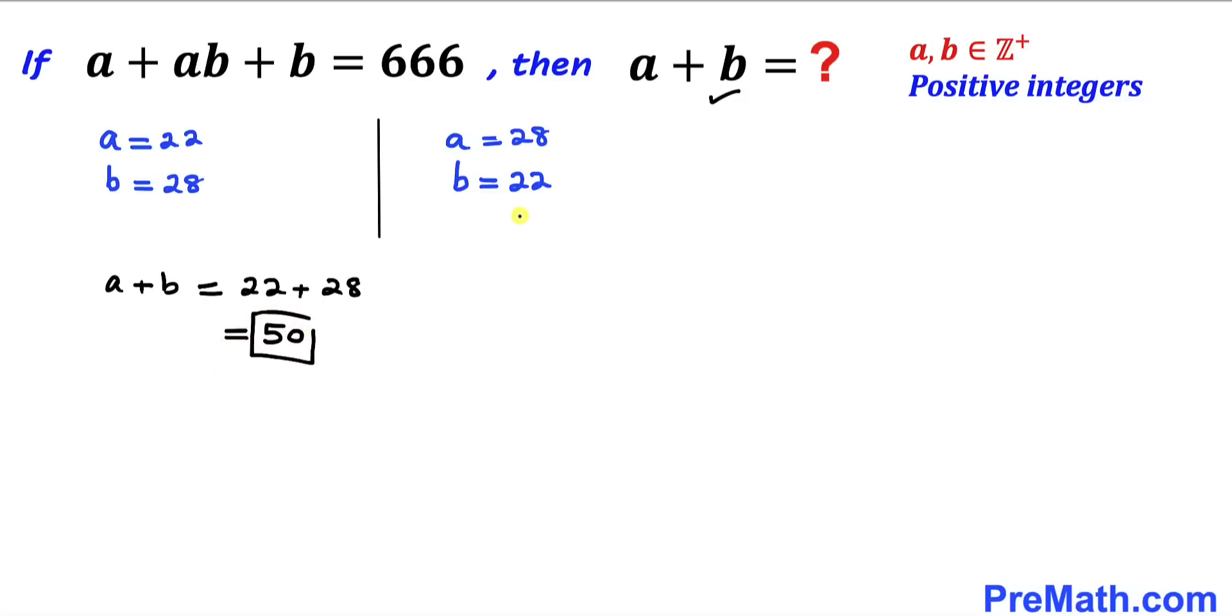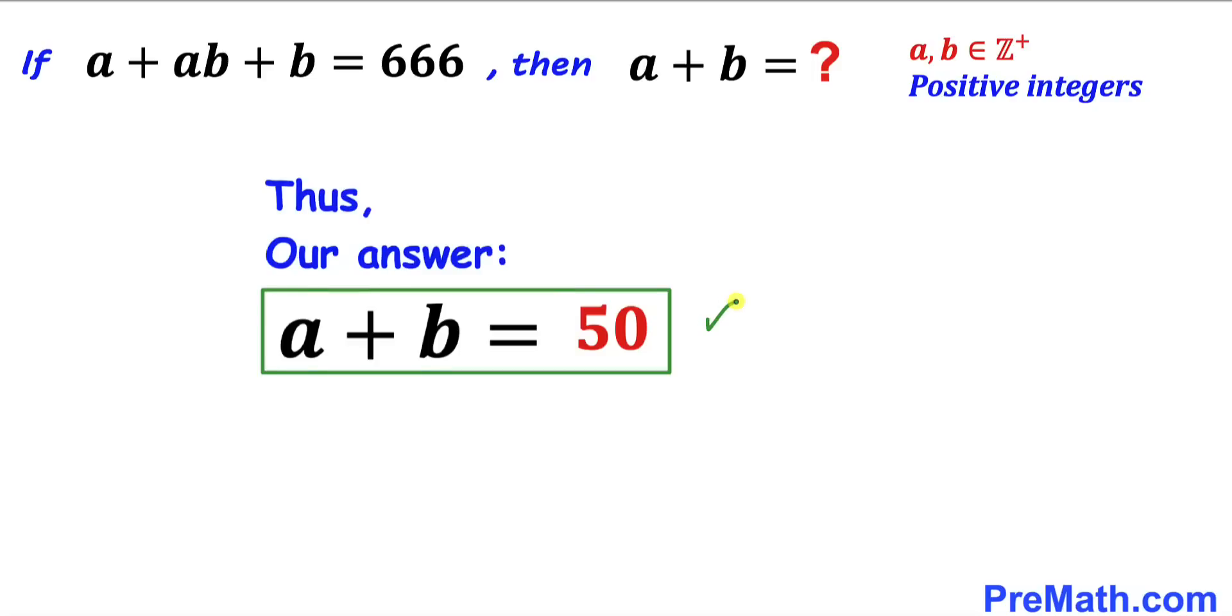In the other scenario, a plus b is 28 plus 22, which also gives us 50. Thus, our a plus b value turns out to be 50.